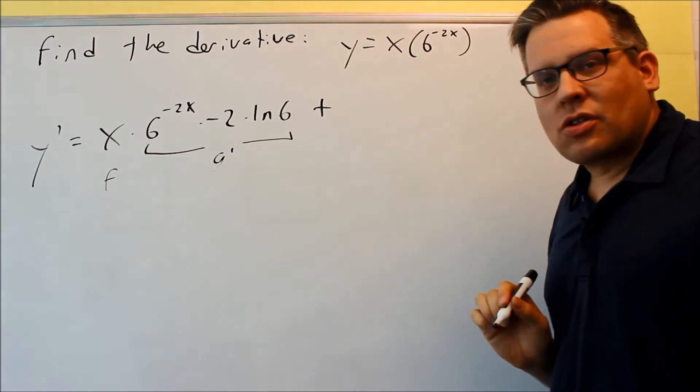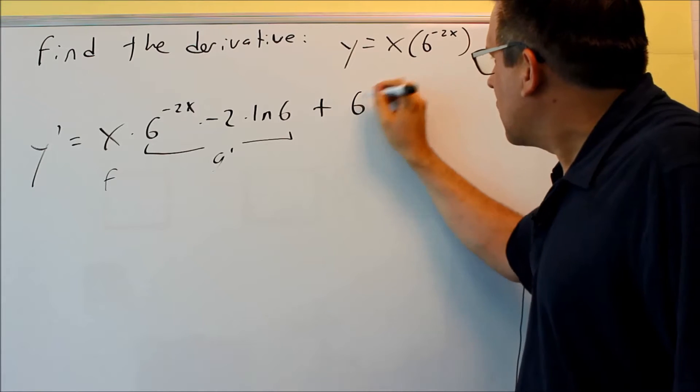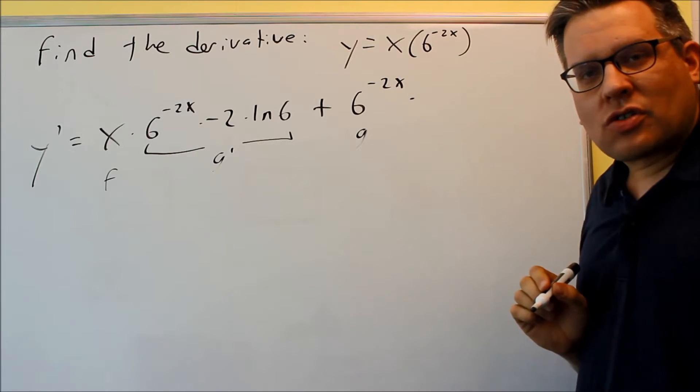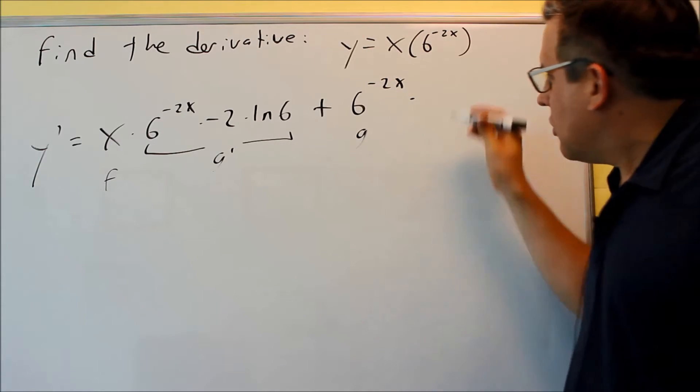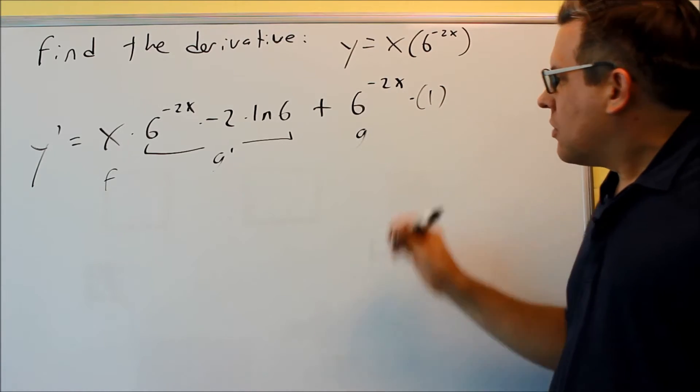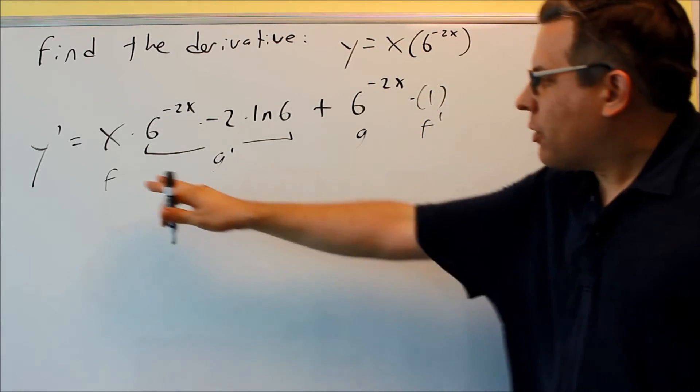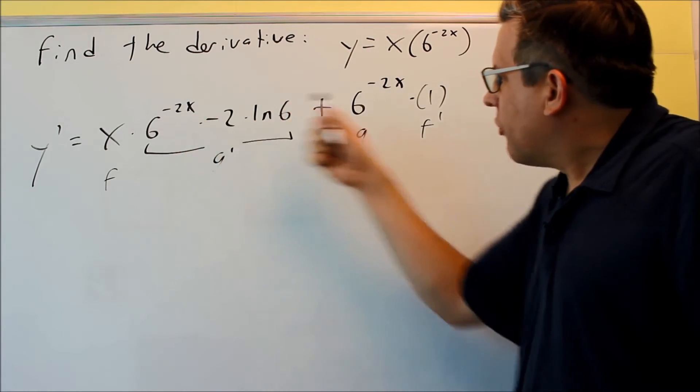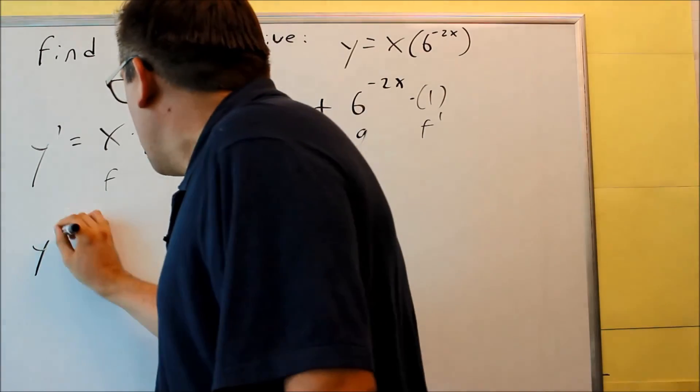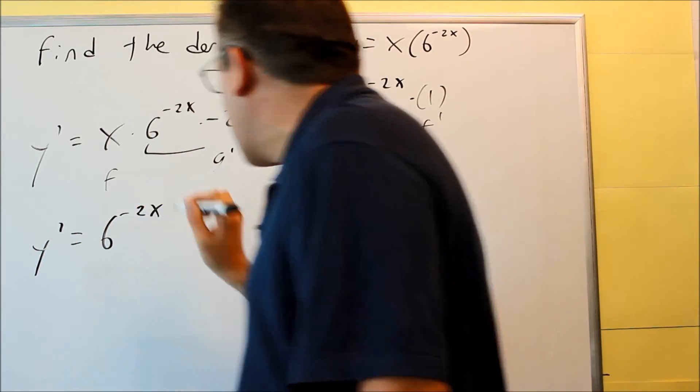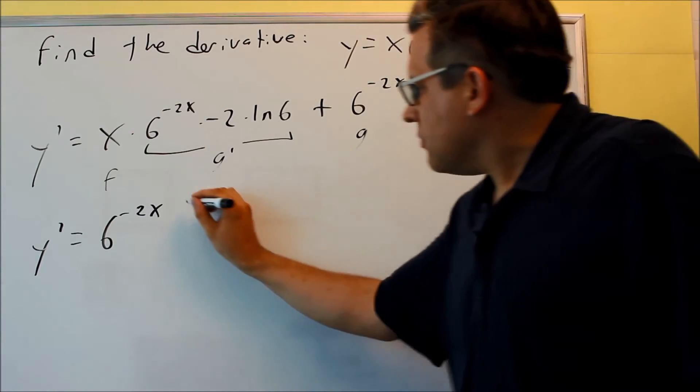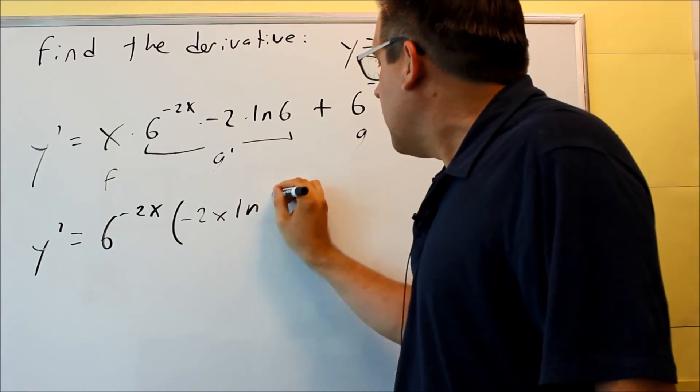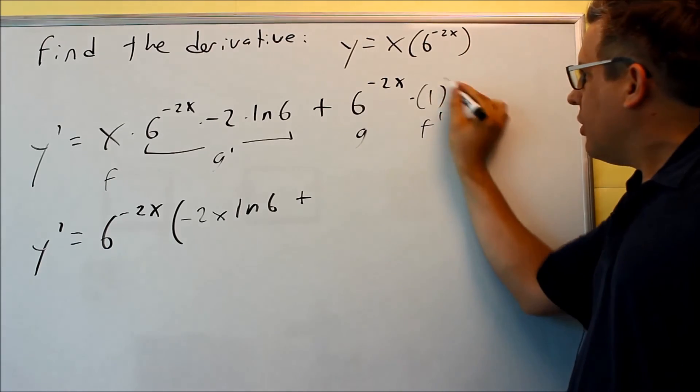Plus the second thing, so the second thing is 6 to the negative 2x, this is your g, and then times the derivative of the first. In this case, x is our f, derivative of x is just going to be 1, and that's your f primed. So now we have all the components of our product rule, and the last thing we're going to do now is just do some factoring. We do have a common factor, 6 to negative 2x, we can pull that out. So 6 to negative 2x will come out front, and then whatever is left over, we have a negative 2, an x, and natural log of 6, plus, and here we just have a 1.